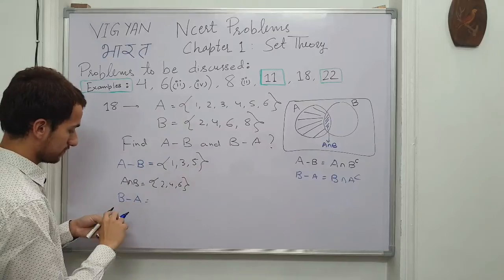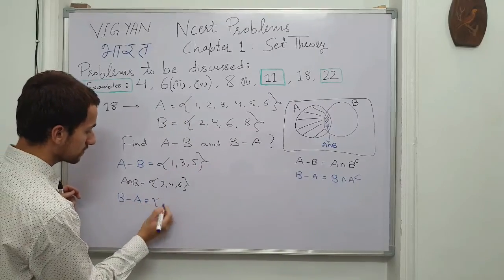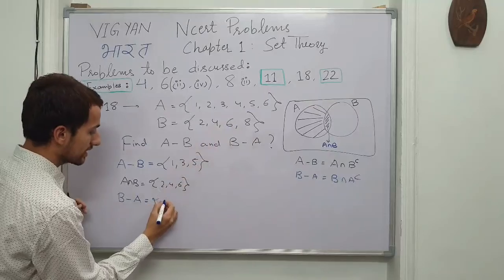So what we get? 2, 4, 6 are common, so we eliminate those, leaving the set of 8.